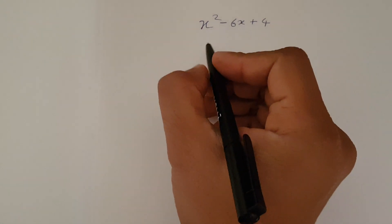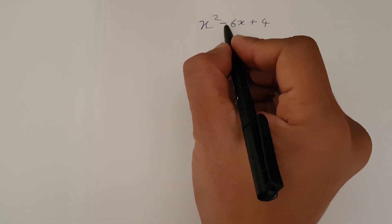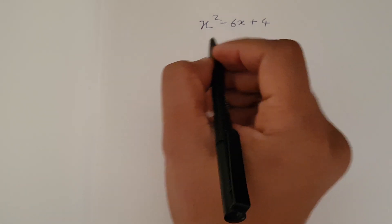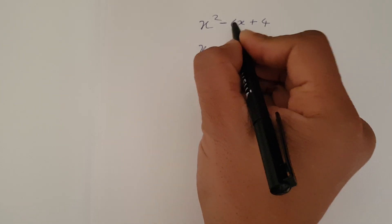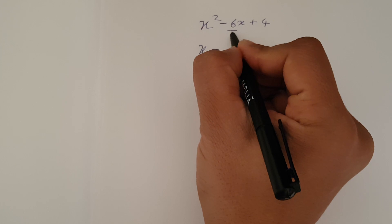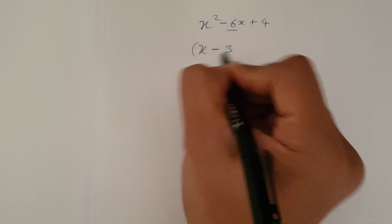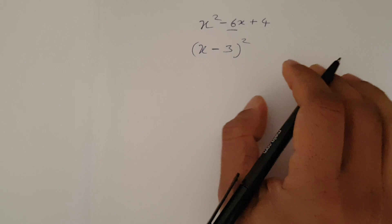So that's very easy. First thing what you have to do is, the middle number, you have to half it. So just write x minus half of the middle number, which is 3. Close the bracket, square it.